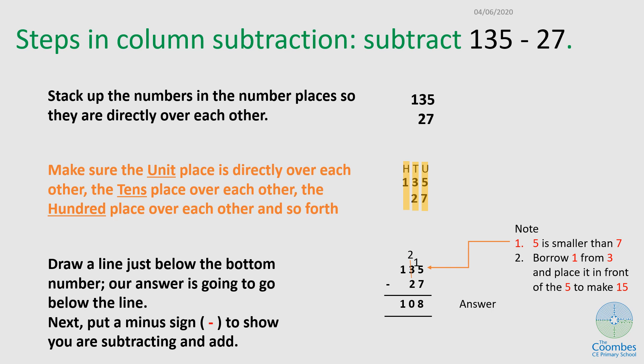You cannot reverse these numbers. You can never have the 27 written first, so you have to write 135 take away 27. Next, when I'm writing them, I align the units, the tens, and the hundreds. Then I draw a line underneath and put a minus sign just to remind me, and now I can subtract.